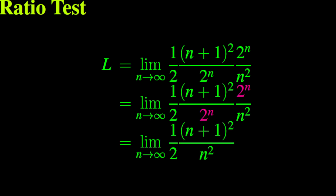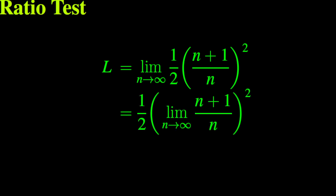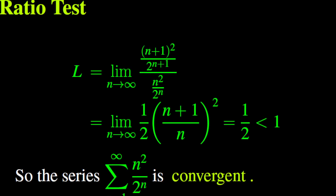We simplify the common factor and obtain the limit as n goes to infinity of one half times (n+1) squared over n squared. This is the same as one half times the square of the limit as n goes to infinity of (n+1) over n. Using the continuity of the function x squared, L equals one half times the square of 1, which equals one half. Therefore the series n squared over 2 to the power n is convergent.